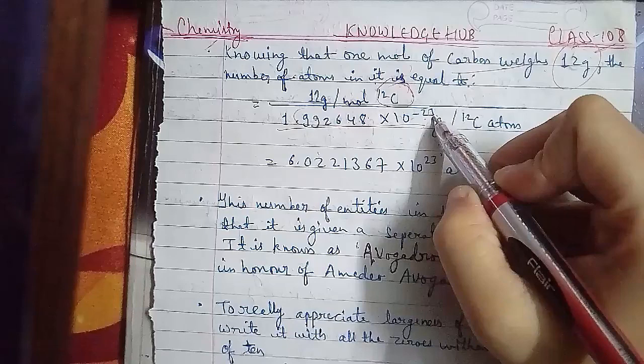The molar mass definition: the molar mass in grams is numerically equal to the atomic mass, molecular mass, or formula mass. For example, the molar mass of water is 18.02 grams, and the molar mass of sodium chloride is 58.5 grams.